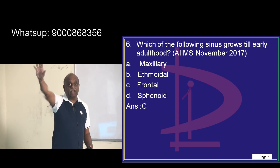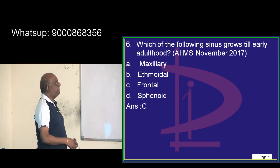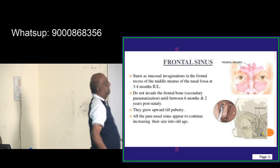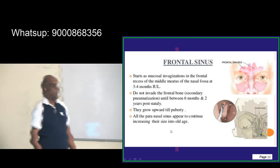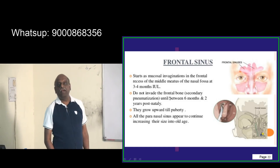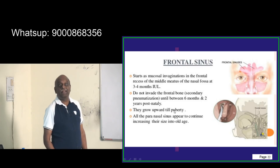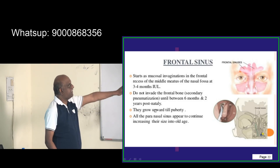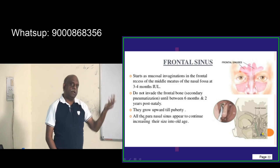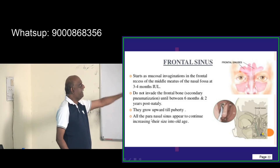Until early adulthood — that is, until the end of puberty — the frontal sinus keeps on growing. The frontal sinus does not invade the frontal bone; secondary pneumatization does not occur until 6 months to 2 years postnatally, but pneumatization continues until puberty.